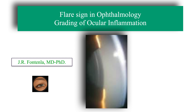The flare sign in ophthalmology is defined as the presence of proteins in suspension in the aqueous humor. These proteins in suspension transform the aqueous humor, which is in principle absolutely transparent, into a cloudy fluid. This increase in turbidity is in proportion to the number and amount of proteins present in the suspension.